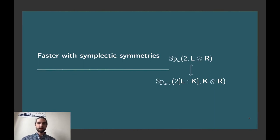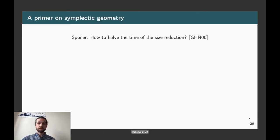So, now let's see how we can improve the complexity of the algorithm using symplectic symmetries. So, the idea would be to halve the time of this size reduction part that I said, and this can be seen as the generalization of the work of Gama, Gargram, and Nguyen in 06. So, first of all, let's draw a bit of a table between differences between Euclidean space and symplectic space.